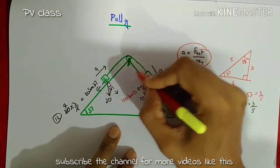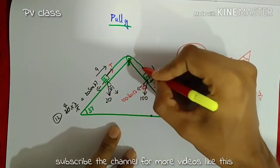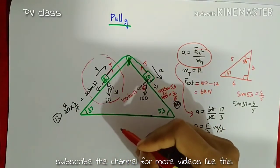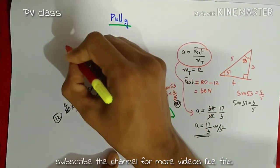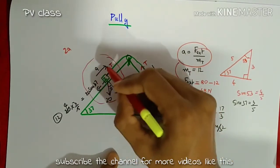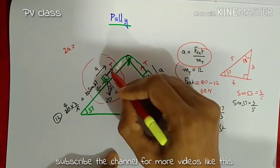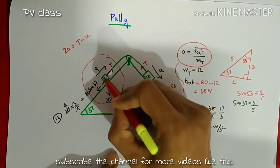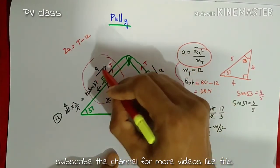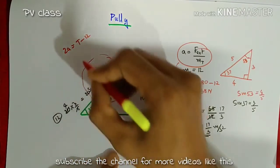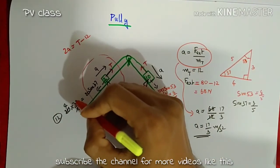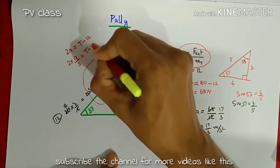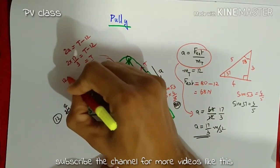To find the tension, since it is a single string, tension T is the same throughout. Taking the free body diagram of the 2 kilogram mass: it moves with acceleration a, so net force equals 2a. The tension T is greater than the opposing force of 12 Newton, so 2a equals T minus 12. Substituting a equals 17/3, we get 2 into 17/3 equals T minus 12.